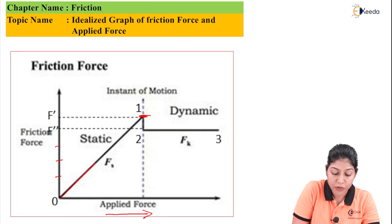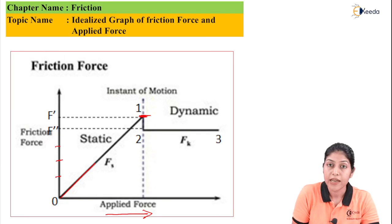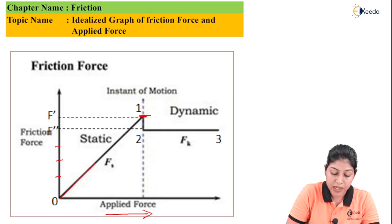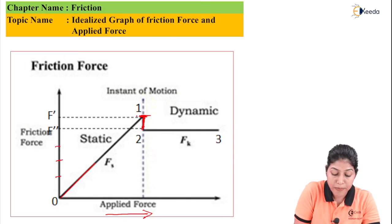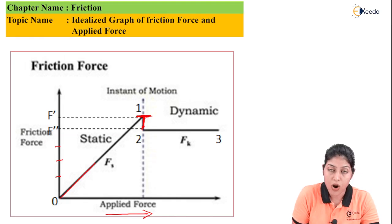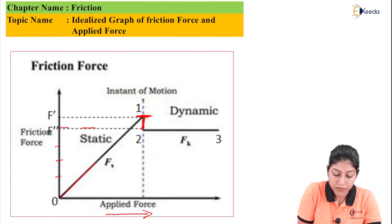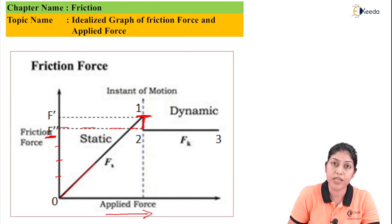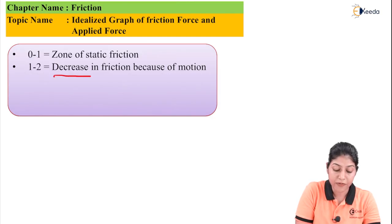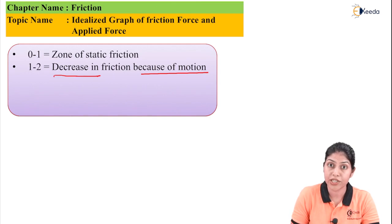When the body starts motion after point 1, if we are not increasing the applied force further, in region 1 to 2 the friction force will reduce. Point 1 is the impending motion condition where we consider maximum friction. During region 1 to 2, even without increasing the force, during impending motion the value of friction will reduce. The friction force at this region is represented as kinetic friction, and region 1 to 2 represents the decrease in friction because of motion. This is the second condition during friction.